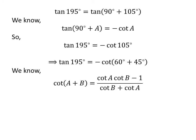We know the trigonometry identity: cotangent of A plus B is equal to cotangent of A times cotangent of B minus 1, upon cotangent of B plus cotangent of A. The proof of this identity and its applications are explained in the video in the upper right corner, and the link is in the description section.